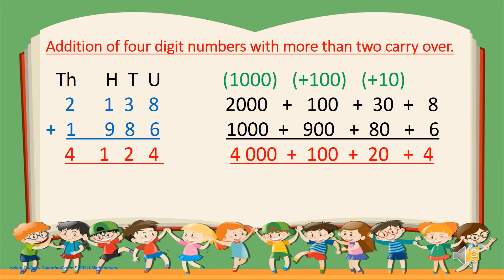Now see the normal way. 8 plus 6 — put 4, carry 1 over to the tens column. 8 plus 3 plus 1: keep 2 there and take 1 to hundreds. 9 plus 1 is 10, plus 1 is 11 — keep 1 there and take 1 to the next column. So 2 plus 1 is 3, plus 1 is 4. 4,124 is the final answer.